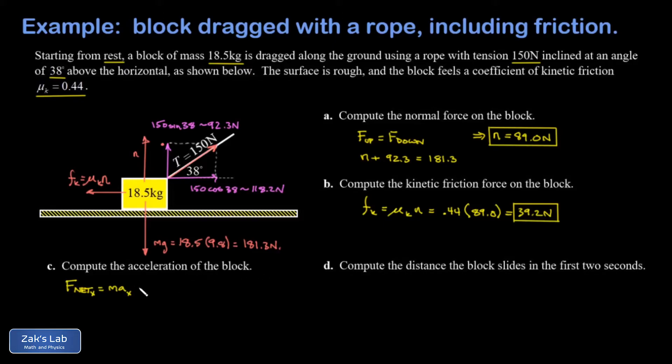The net force in the x direction, if we just adopt the most common coordinate system where rightward is positive, the net force is going to involve a positive 118.2, so that's the x component of the tension pulling to the right, and then a negative for the kinetic friction force, a negative 39.2.